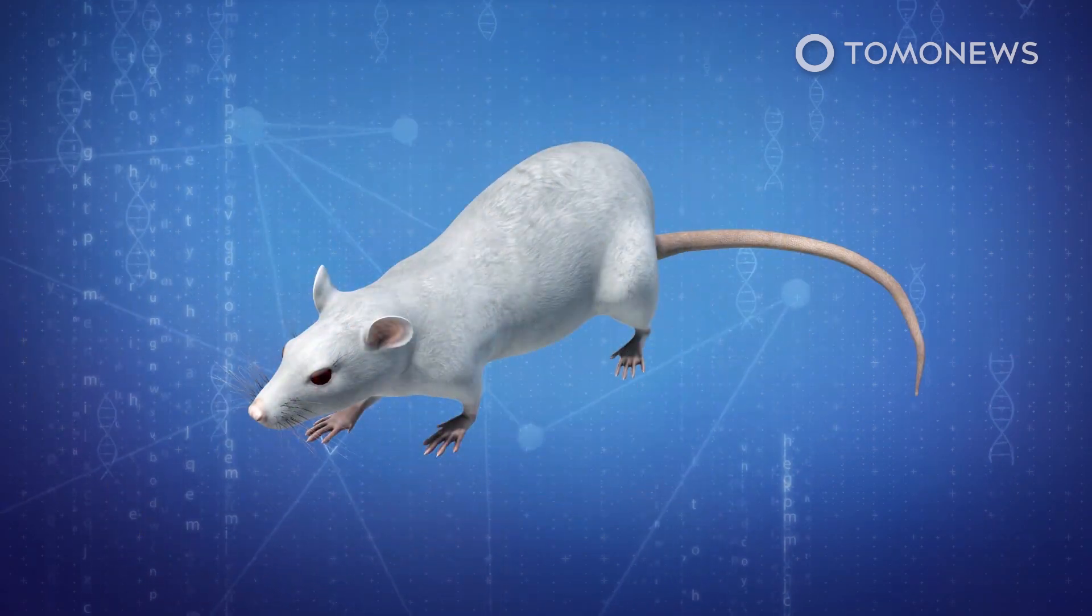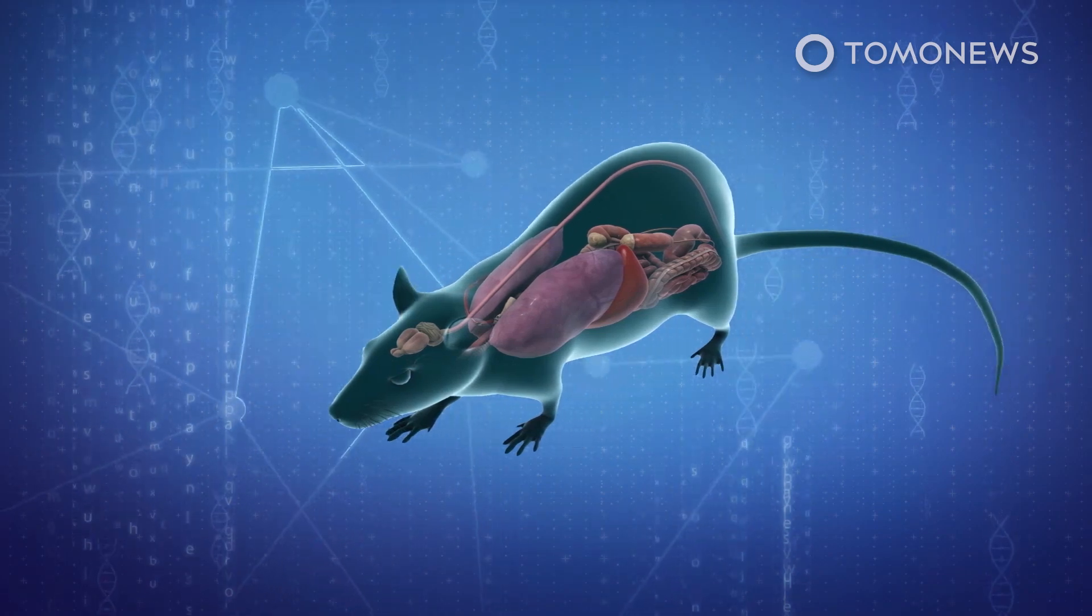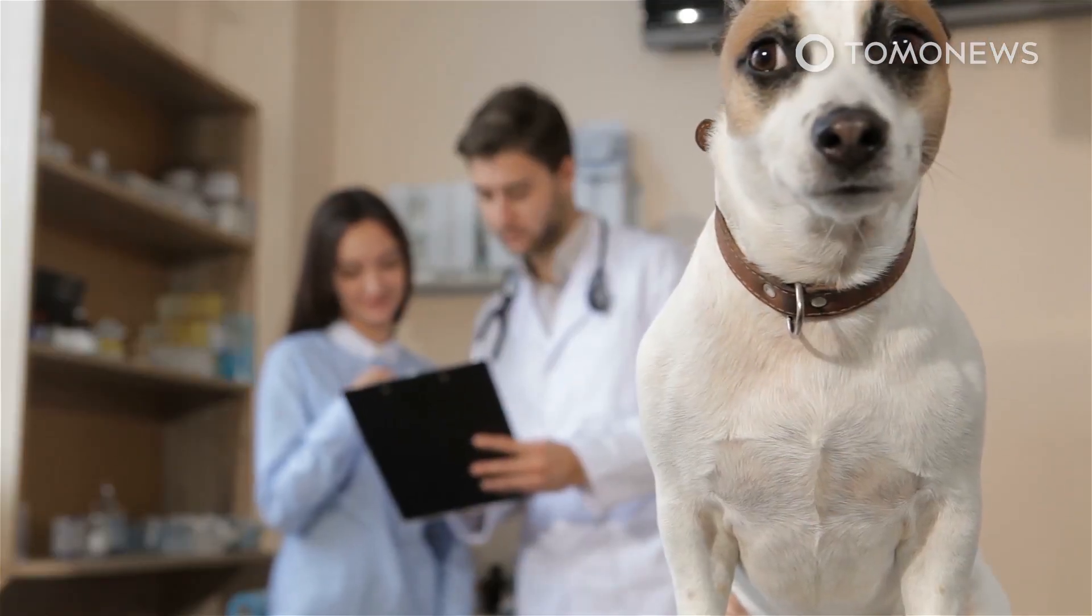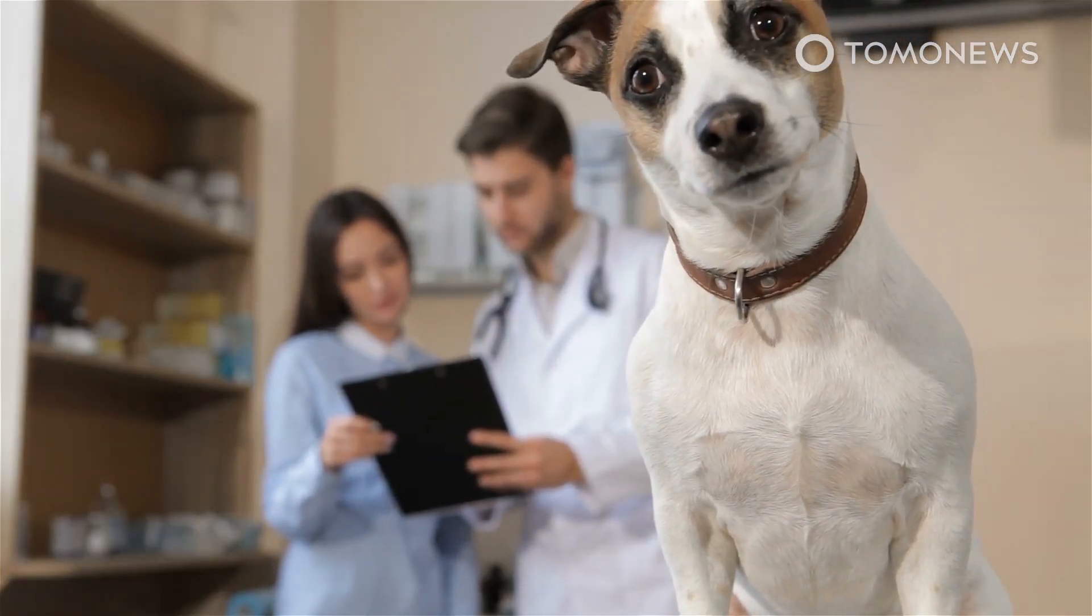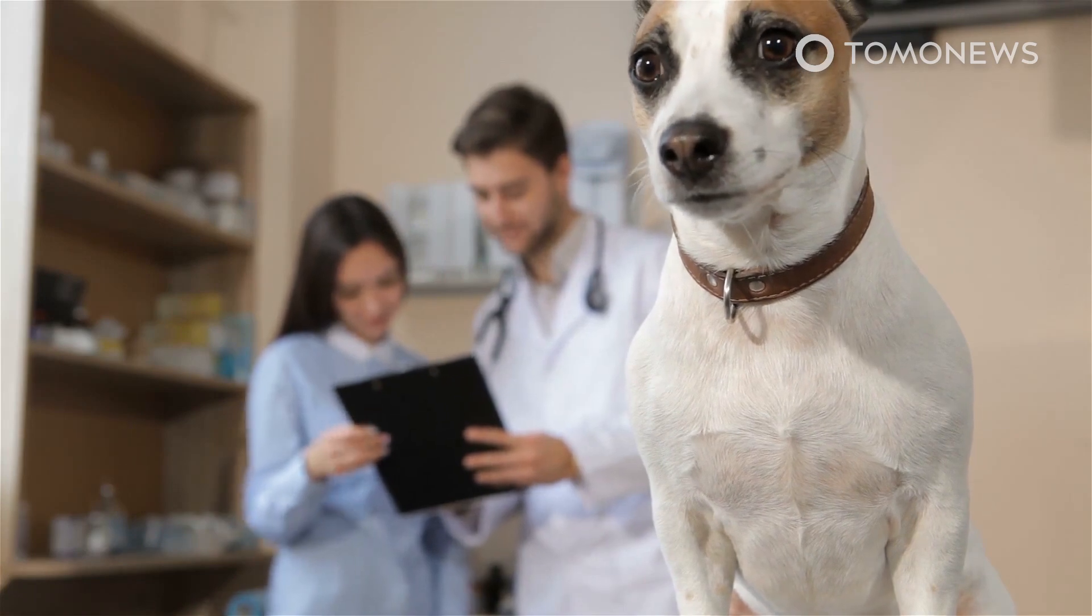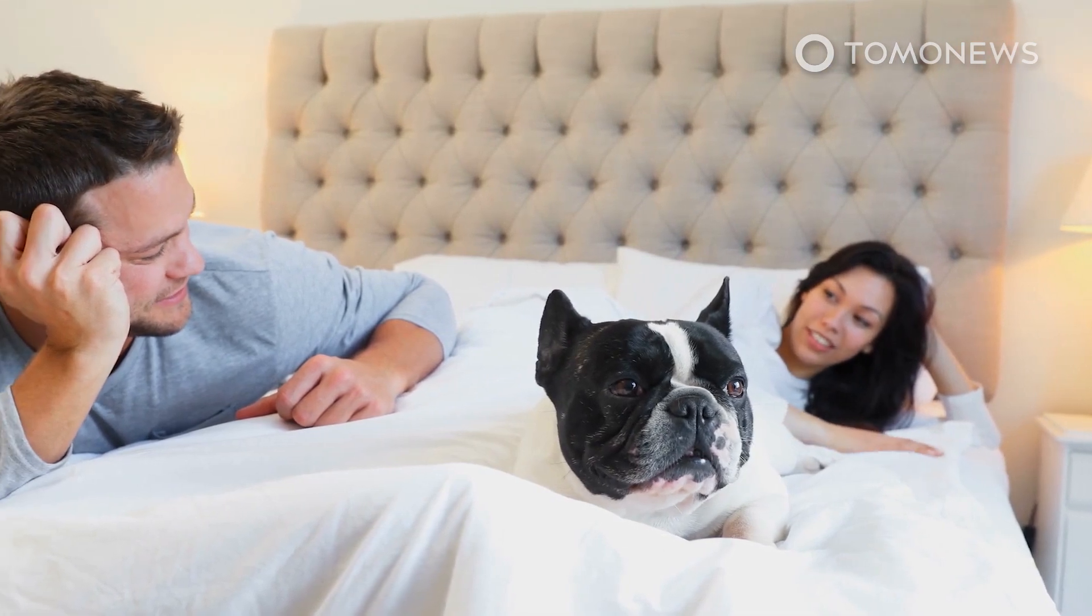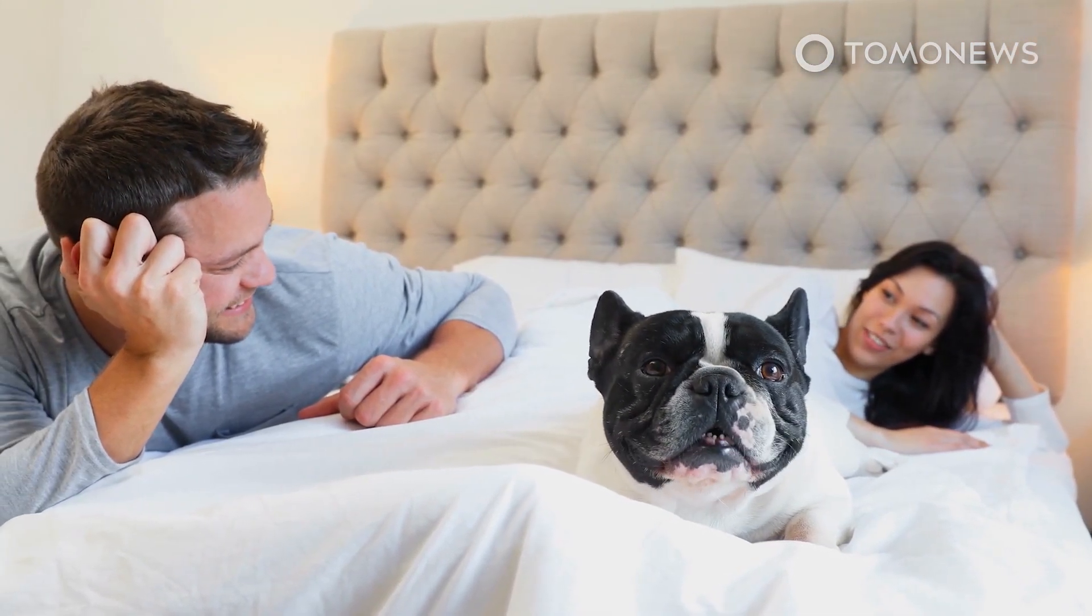This experiment led to concerns that growing organs from another species can eventually lead to organ contamination in the cells of the host. The paper's research supervisor, Masumi Hirabayashi, also stated that this process poses a larger ethical concern because injecting human stem cells into animals could cause them to develop consciousness and reproductive cells.